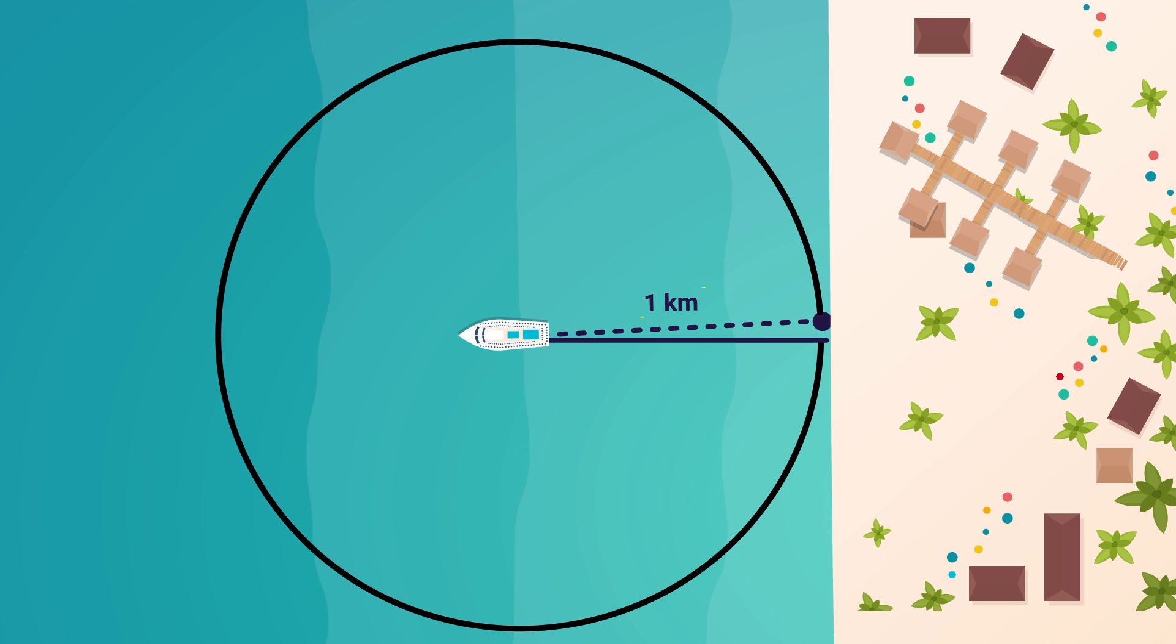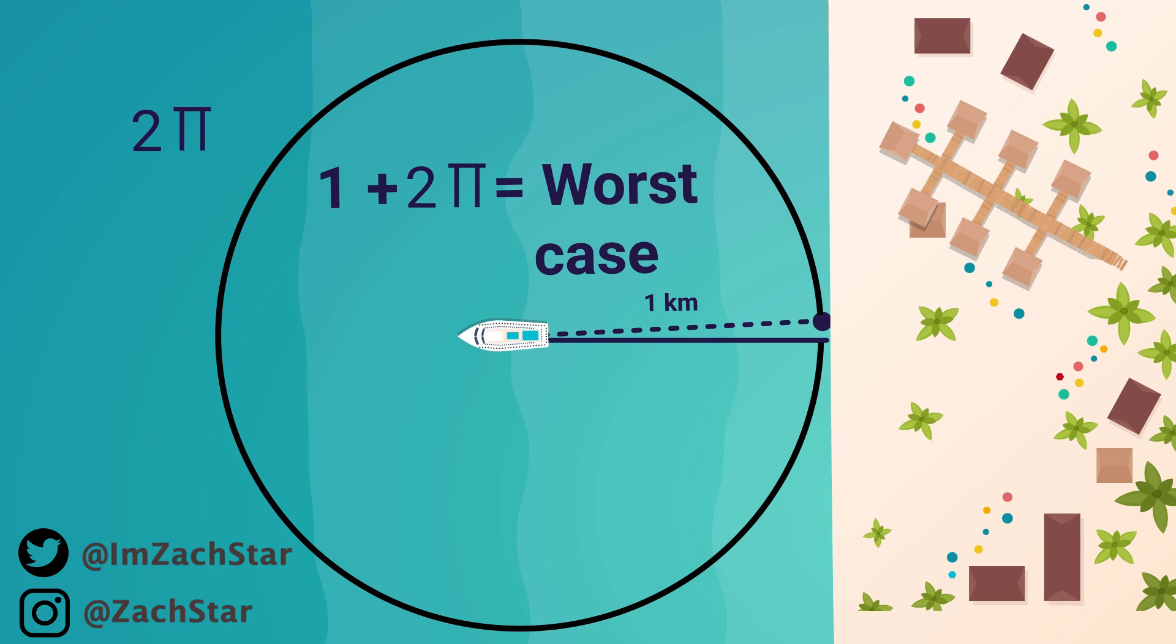and move in an entire circle until you hit it. In this case, you drove one kilometer, the radius, plus two pi, essentially the full circumference. Now, this is the method most people commented on Twitter when I posted this question, but this is not the best we can do.